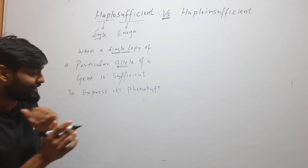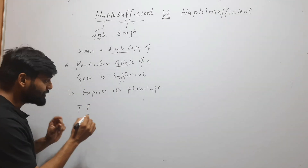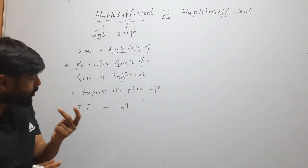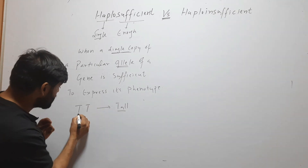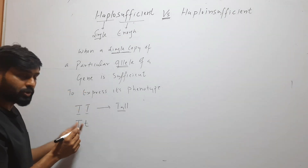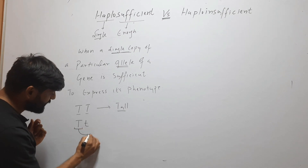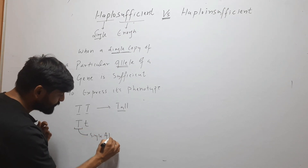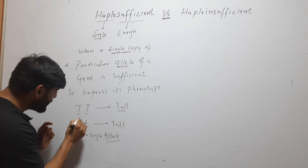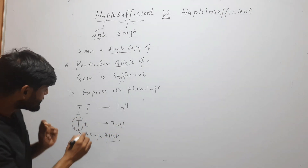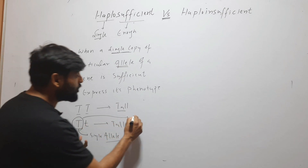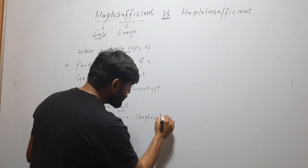So let's understand this with an example. Suppose we have capital T and capital T, and we know that its phenotype will be tall. So here we have two copies of a particular allele — allele is capital T. But when we have one copy, capital T and small t, so here we have only a single allele — capital T is single — and we know that its phenotype is tall. So here this single allele is expressing its phenotype and causing tallness. So in that case this capital T allele will be called haplosufficient.